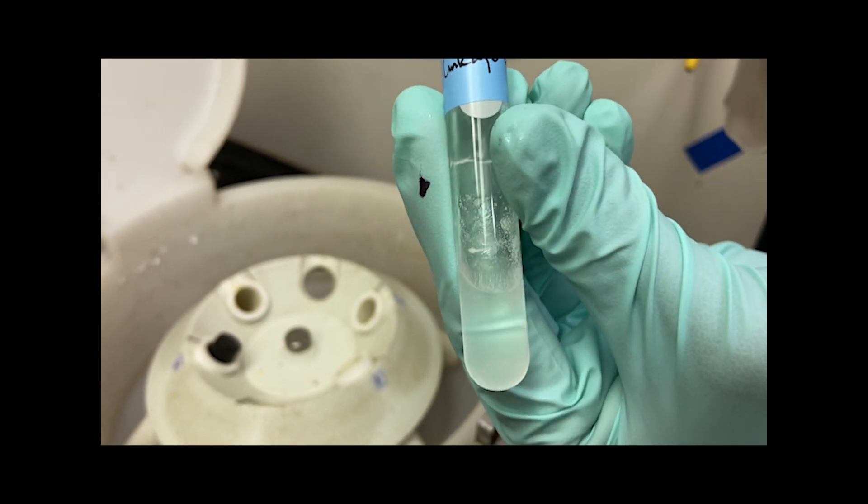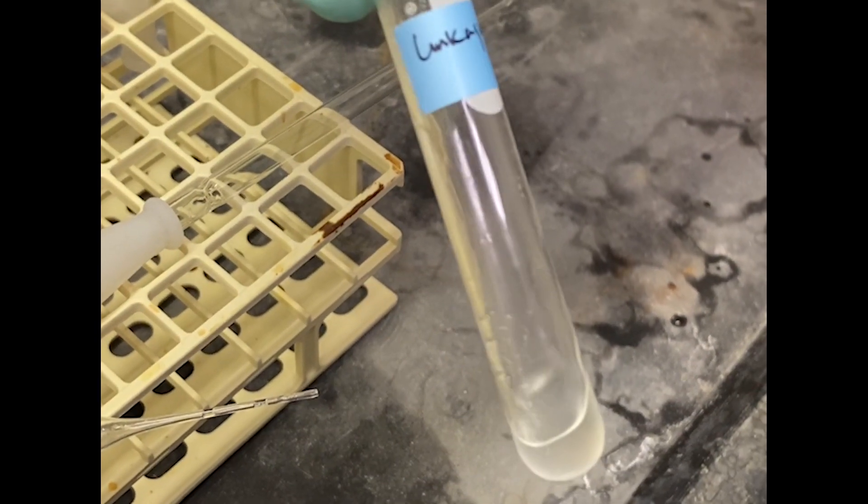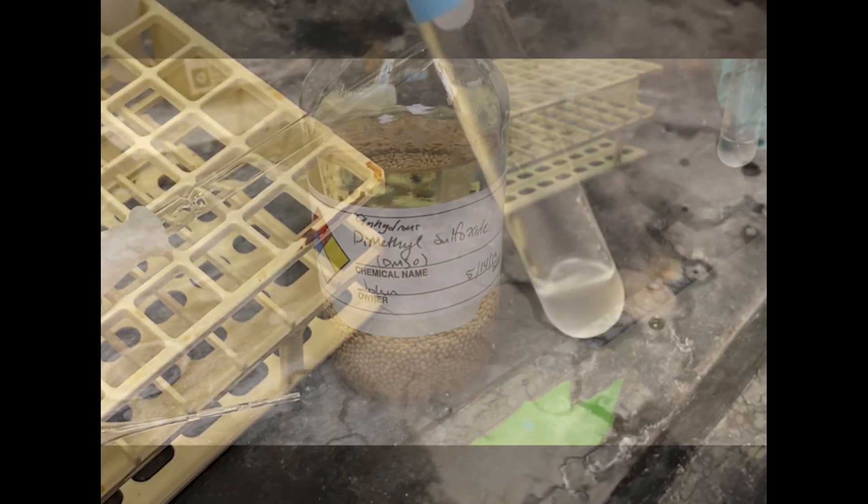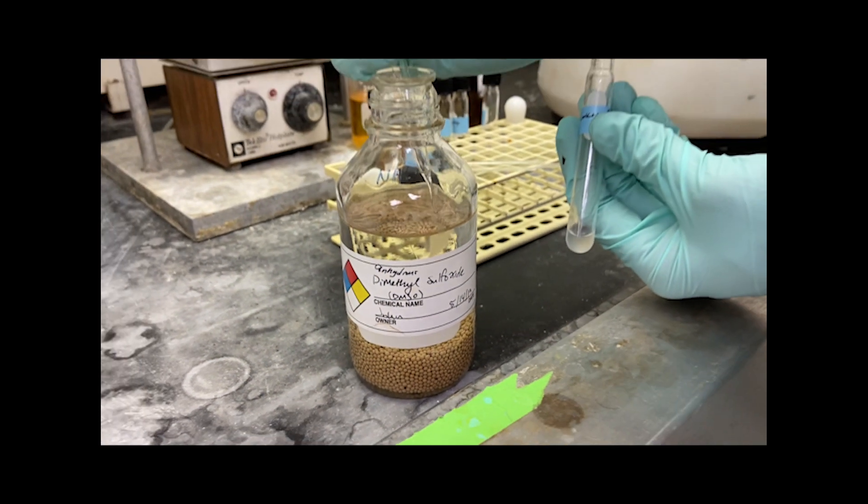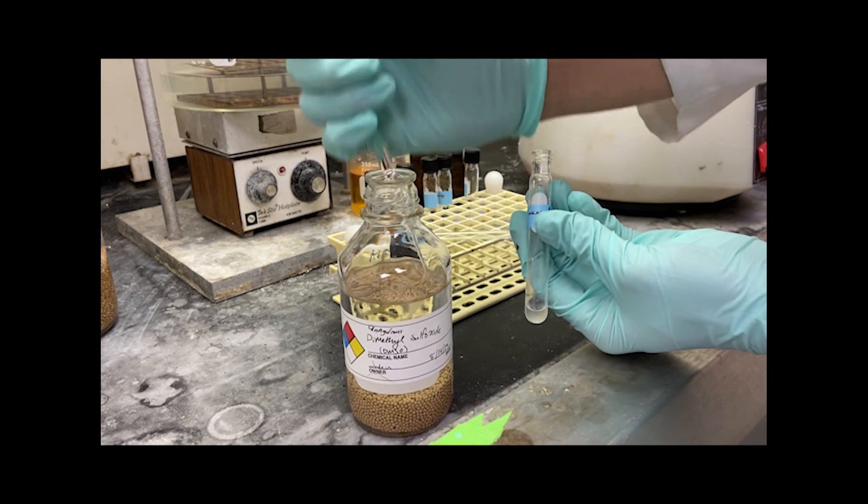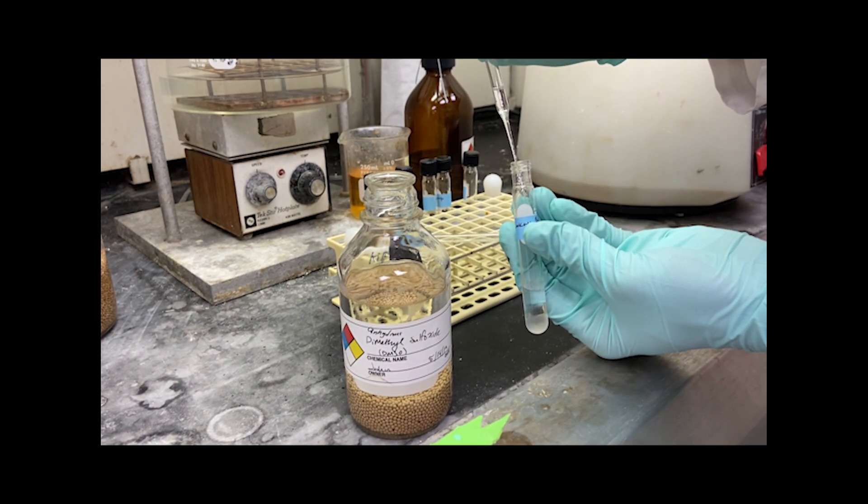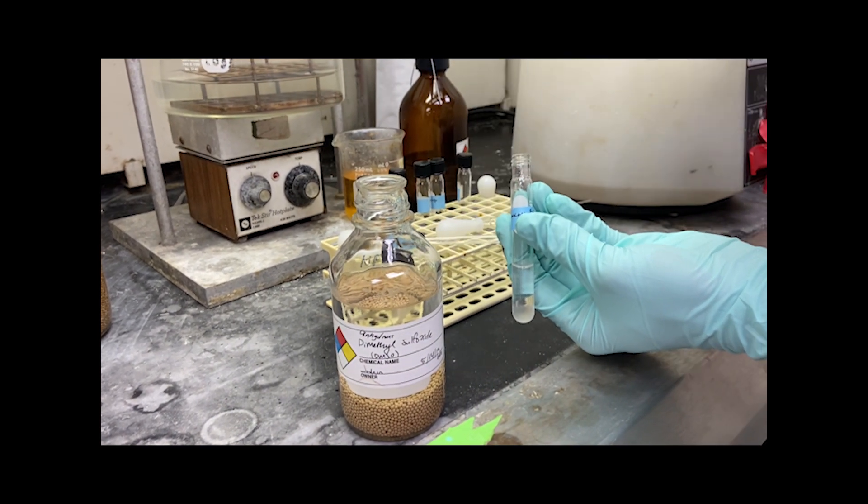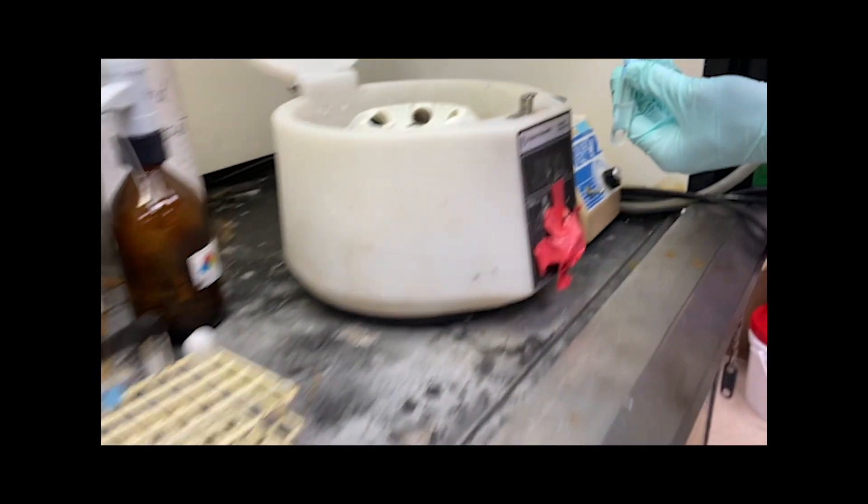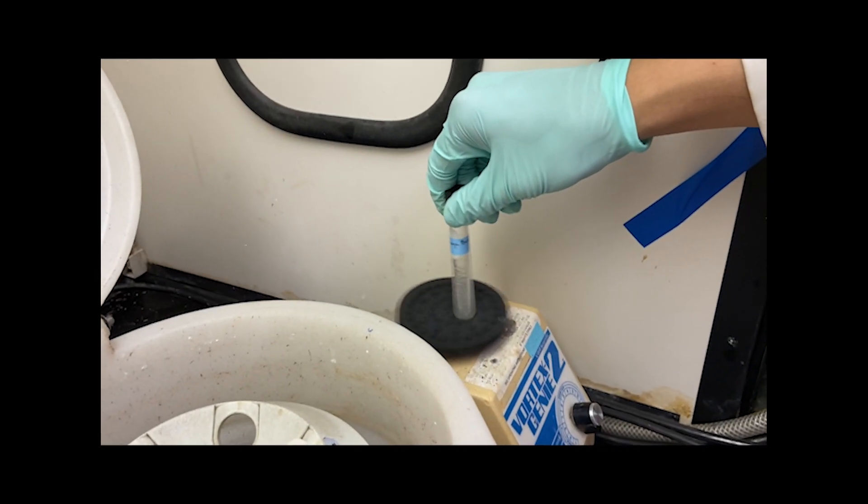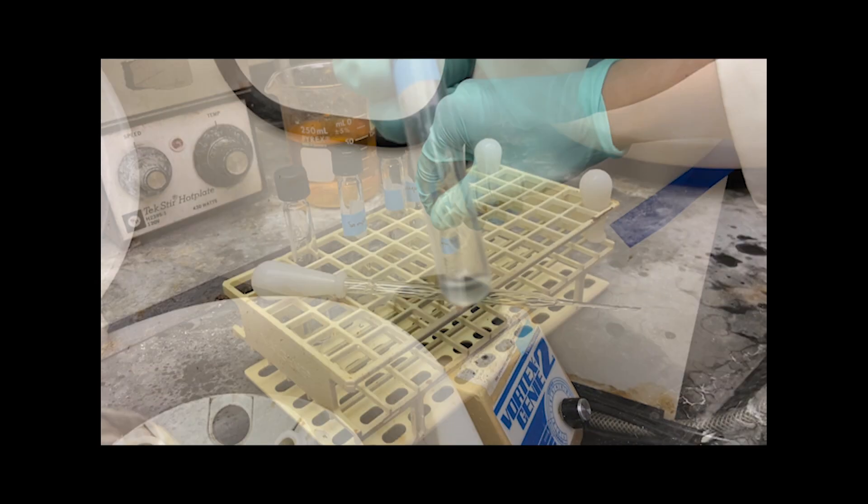We then pipette out the top DMSO layer and rinse the walls of the tube and discard that top layer. We then repeat that process by adding 2 more milliliters of DMSO, vortexing, centrifuging, and removing that DMSO layer while washing the walls of the tube. We do this until the DMSO layer removed is clear.